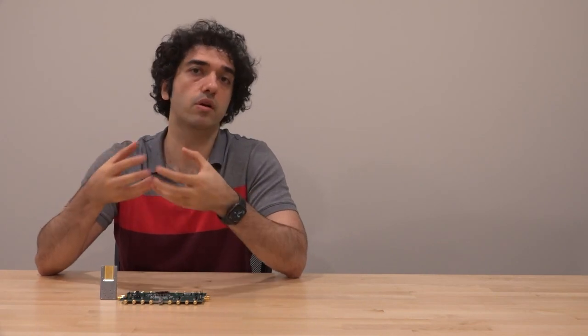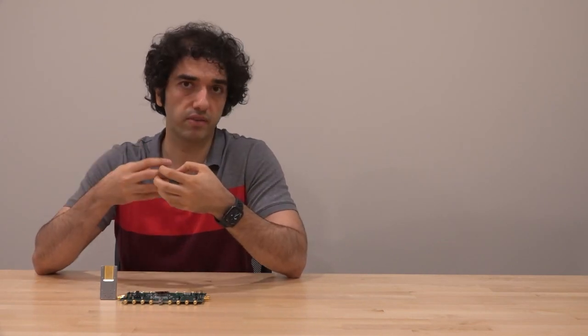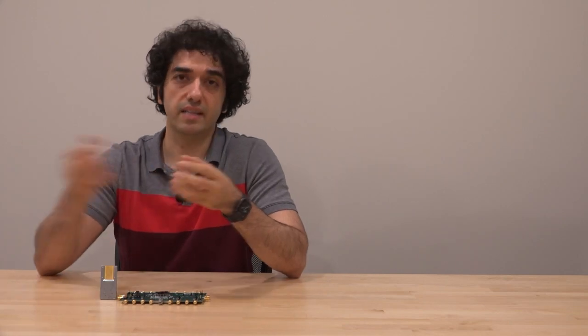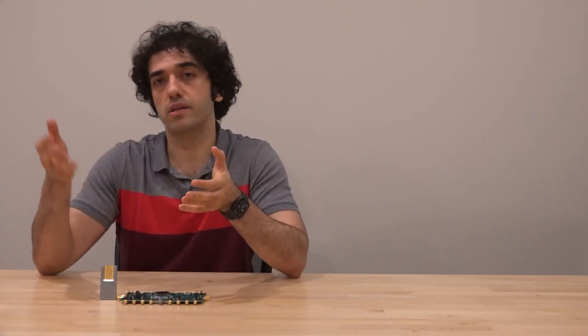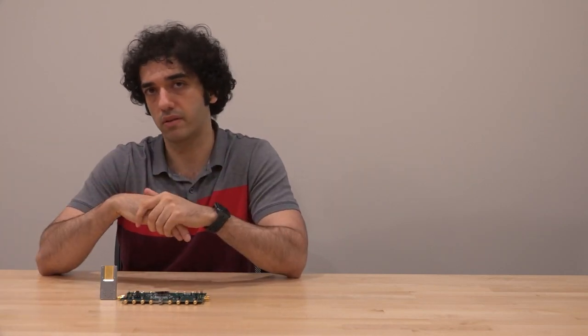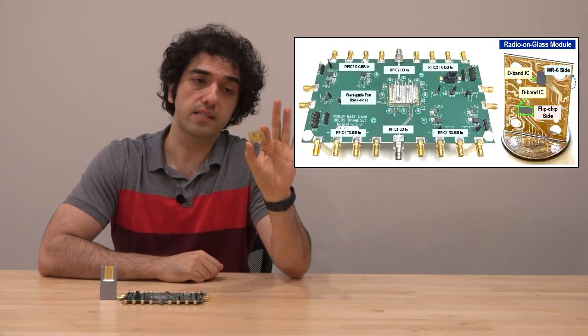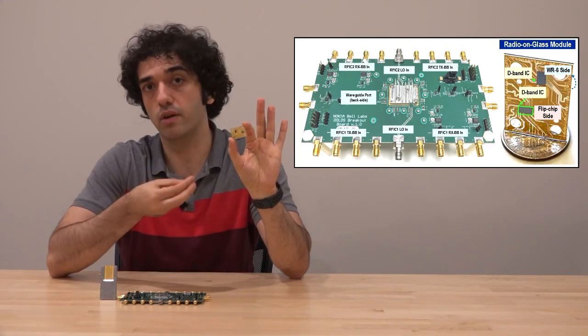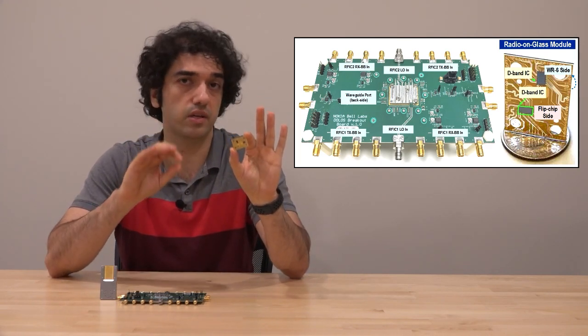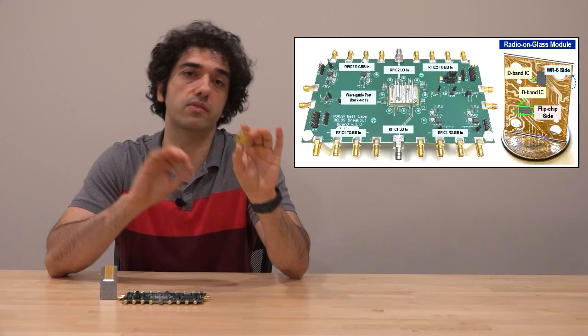Even with a really good RFIC, you still need to get the signal from the RFIC into the antenna. And that interface cannot be very lossy, otherwise it will undo all the performance of the RFICs. And for that, we have moved on to glass. Glass is a really interesting material because it gives you very good lithography. And with some clever design, you can get some really good loss from these.